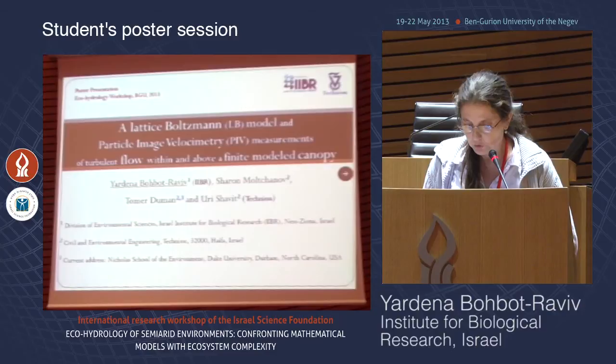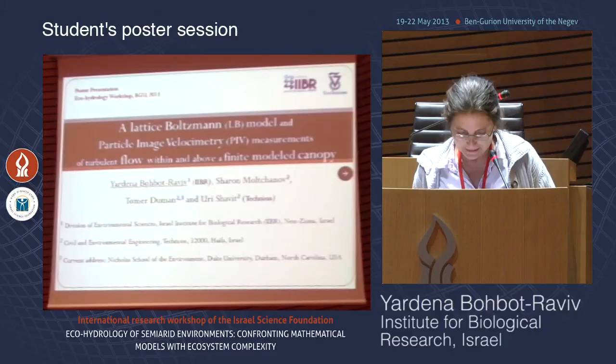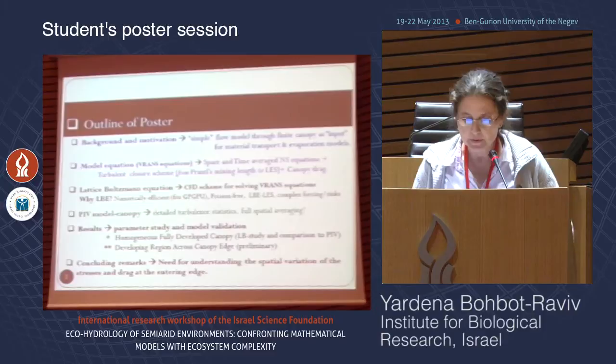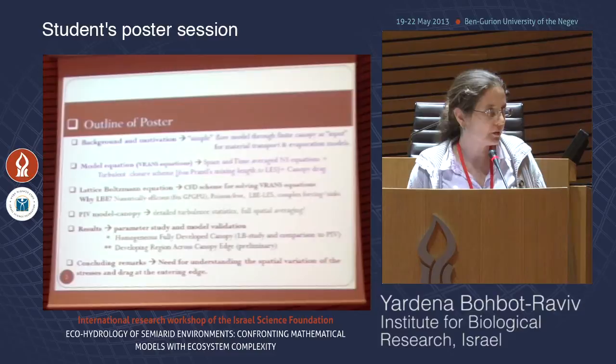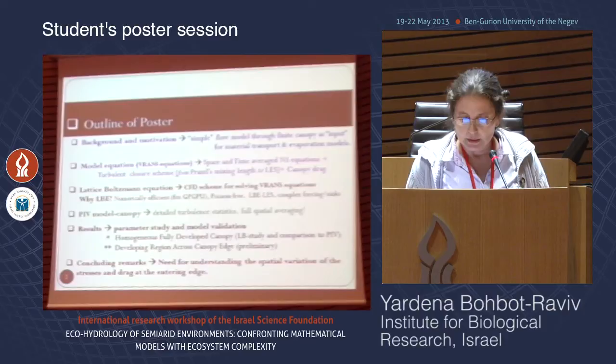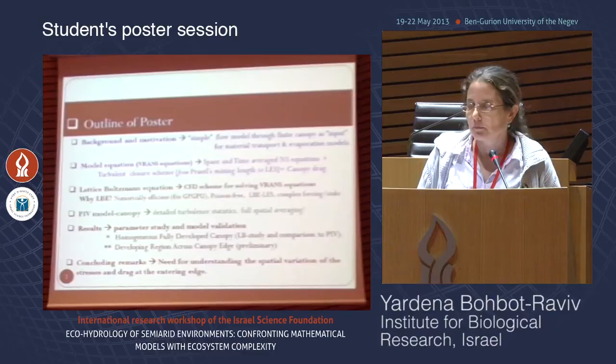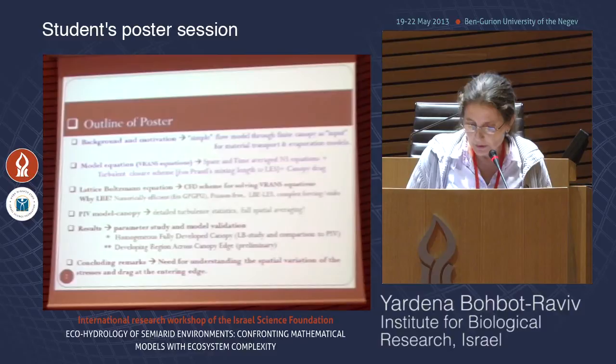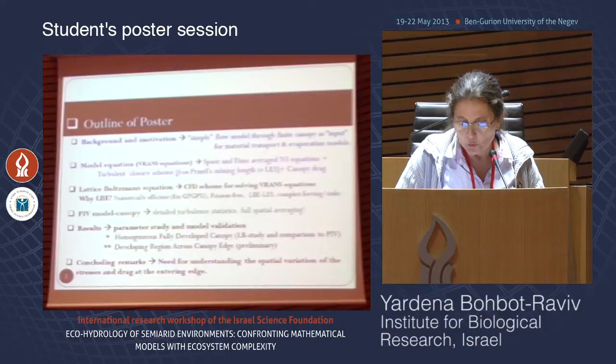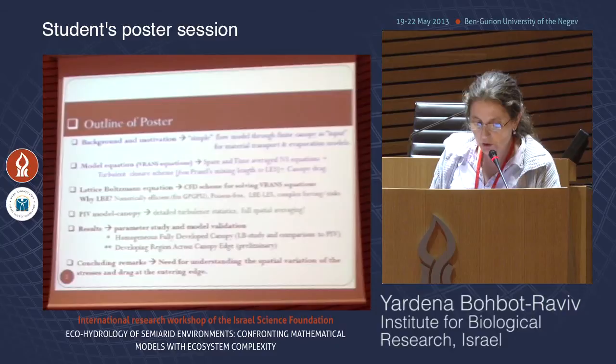The PIV measurements were done in the group of Ulrich Shevitt, Sharon Molchanov, and Tomer Duman. The motivation of the work comes from the need at IIBR for input information on velocity fields and turbulence statistics in the atmospheric boundary layer for transport and evaporation models. This type of information is very costly and time-consuming, so since we want to keep our models simple for risk assessment, we're looking to simplify our velocity models.